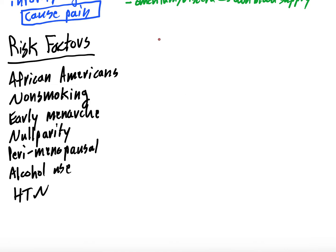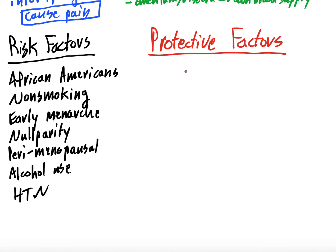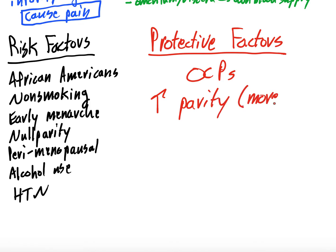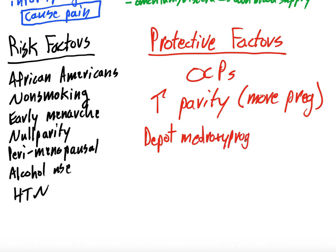What are the protective factors? There are a few important ones that also get into treatment. Oral contraceptive pills are a protective factor. Increasing parity — getting pregnant more often — is a protective factor. And injectable depot medroxyprogesterone is protective against leiomyomas. This helps with risk stratification of patients with certain complaints when you're concerned for leiomyomas, and these modifiable factors can be helpful in management as well.